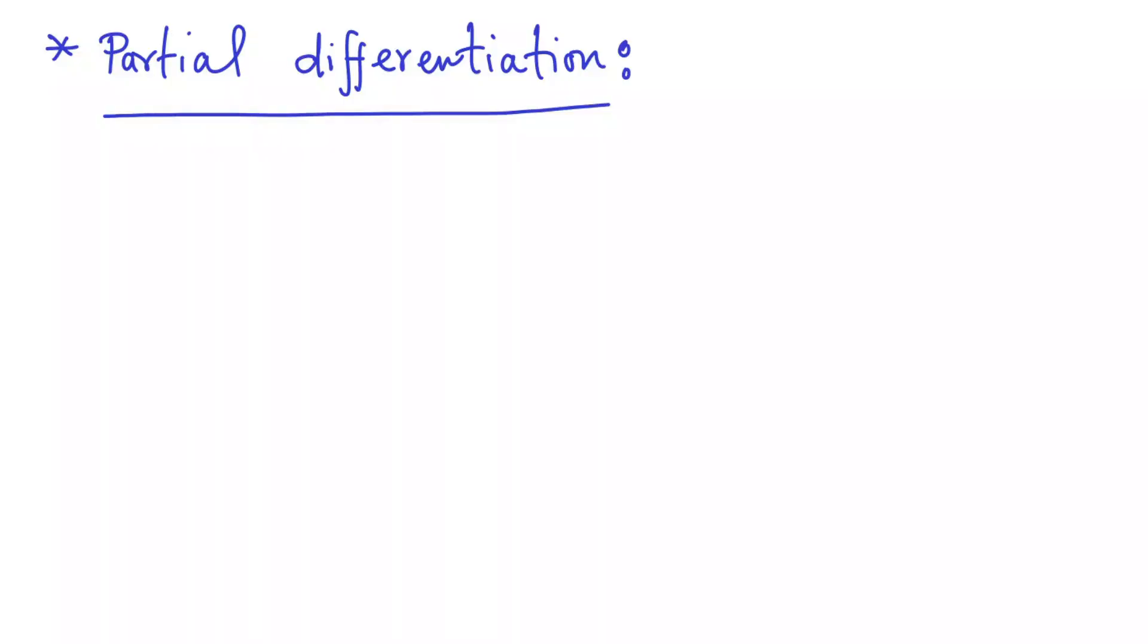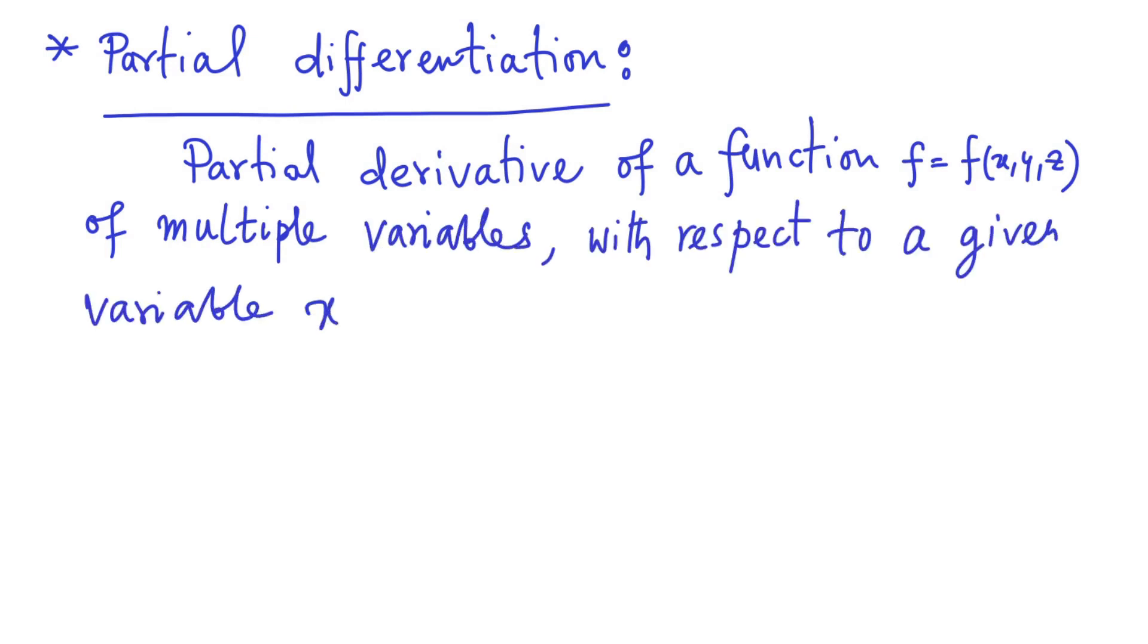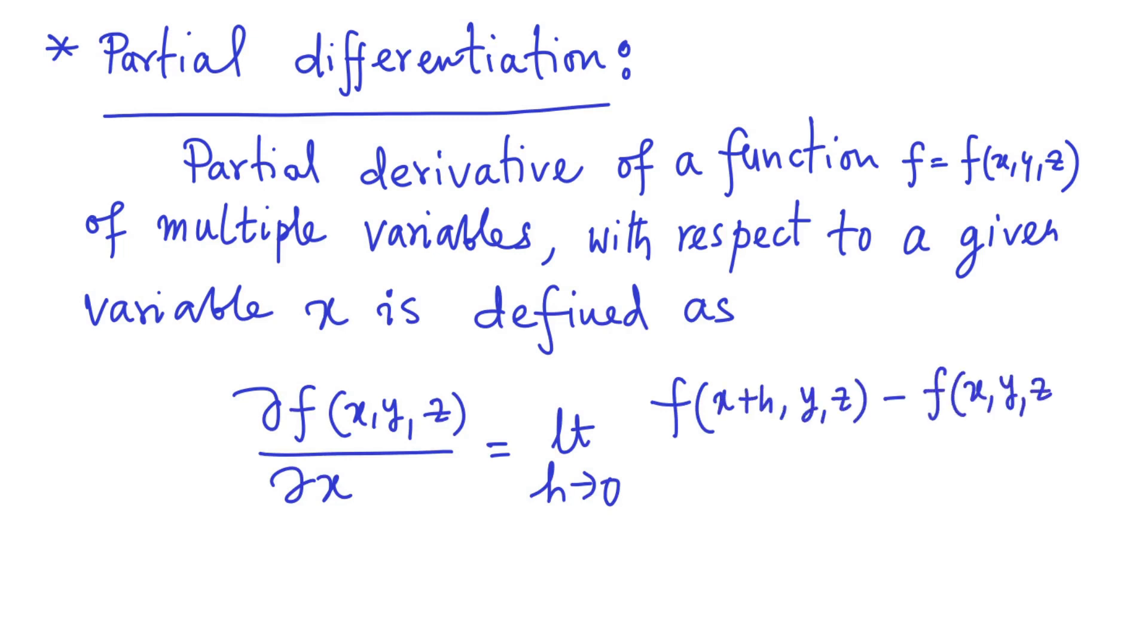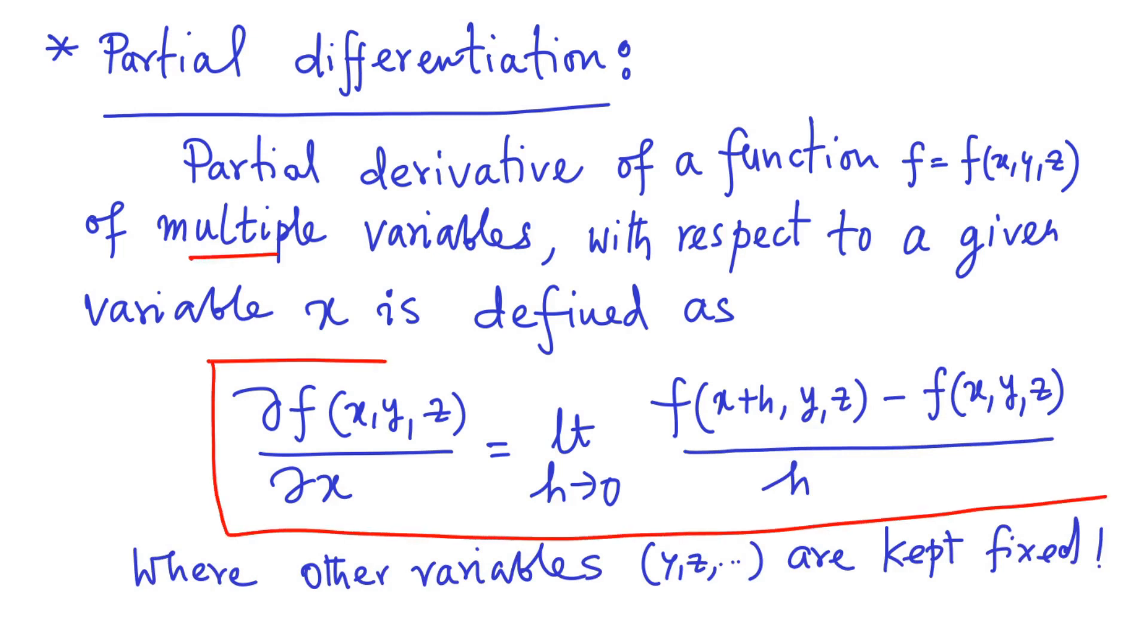So now we introduce the concept of partial differentiation. Partial derivative of a function f of multiple variables with respect to a given variable x is defined as: del f del x equals limit h goes to zero, f of x plus h comma y comma z minus f x comma y comma z, divided by h, where other variables y, z are kept fixed as you see it here.